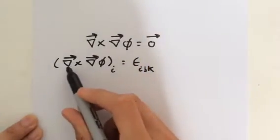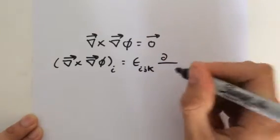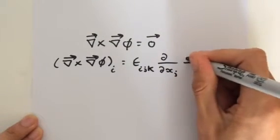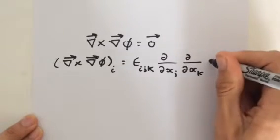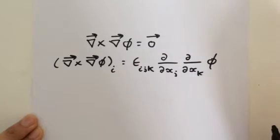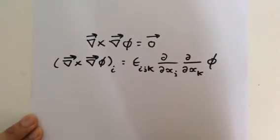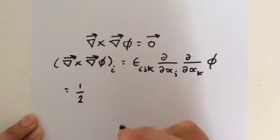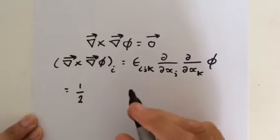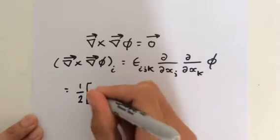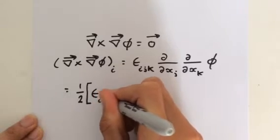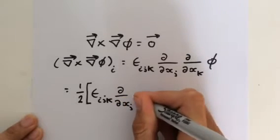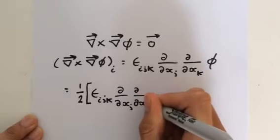We can represent the partial derivative with respect to x_j, and then the partial derivative with respect to x_k acting on phi, which is our scalar field. So we have indices i, j, and k in our expression.